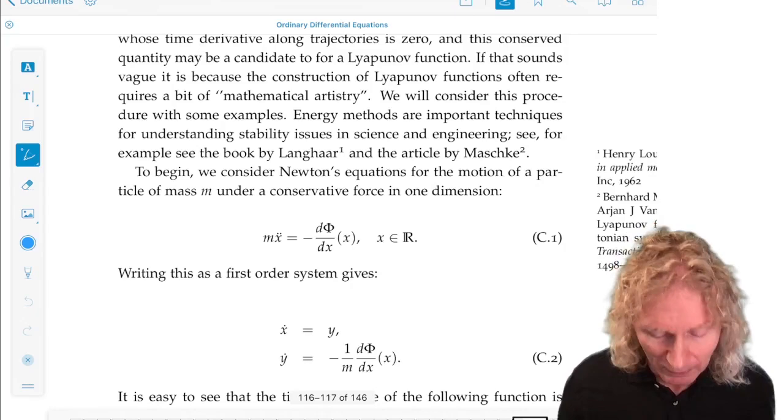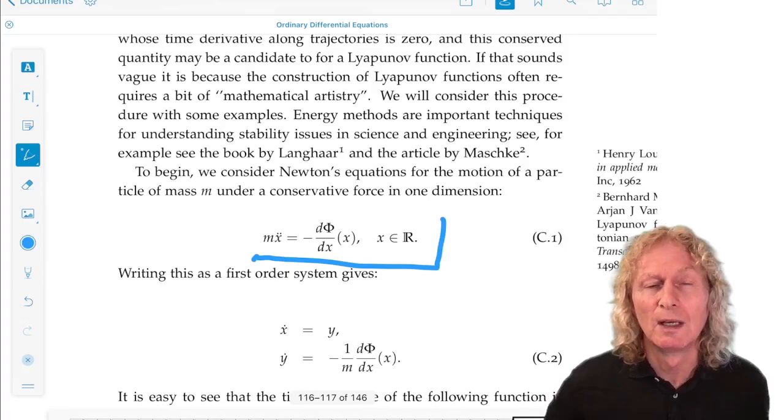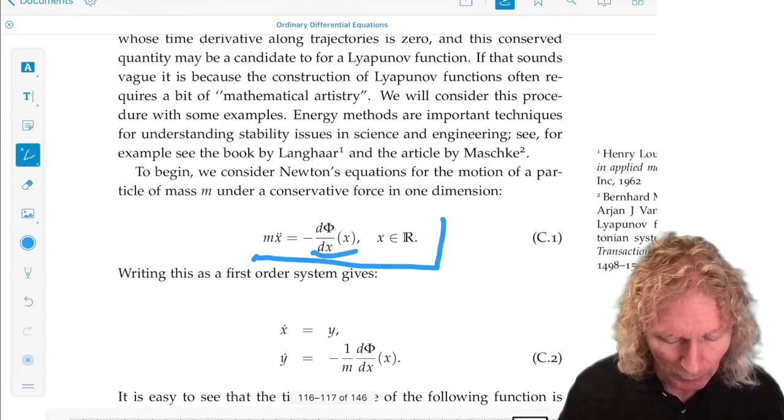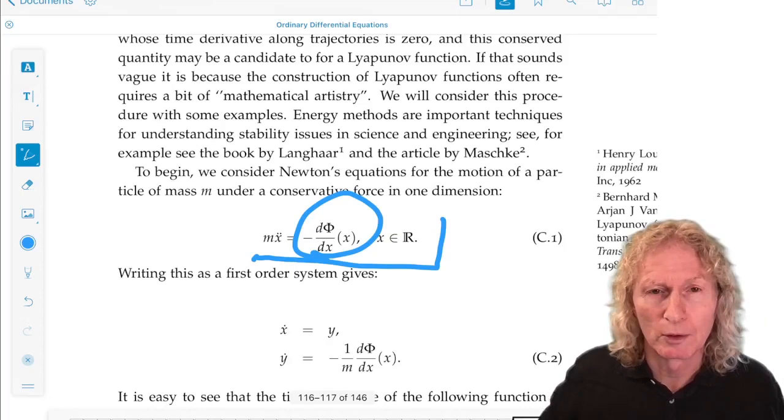So enough talking. Let's start with a simple mechanical system in one dimension. Mx double dot is minus d phi dx. This is Newton's equations in one dimension, where the force is a conservative force. It's given by the negative derivative of this function phi. We call the potential energy function.